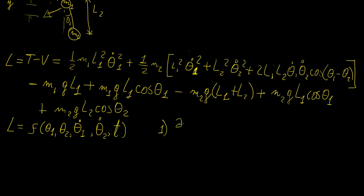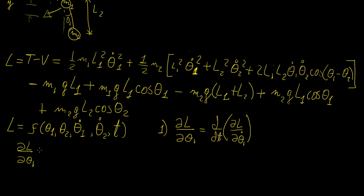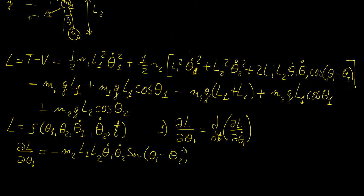The first Lagrange equation involves the partial of L with respect to theta1. In performing the partial differentiation with respect to theta1, we treat every other variable as a constant. Most terms go to zero, but we do have a non-zero term: minus M2 L1 L2 theta1 dot theta2 dot sine of (theta1 minus theta2).